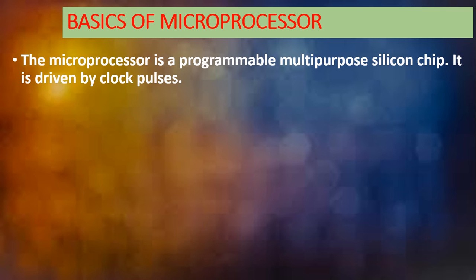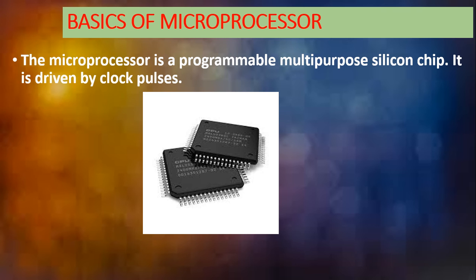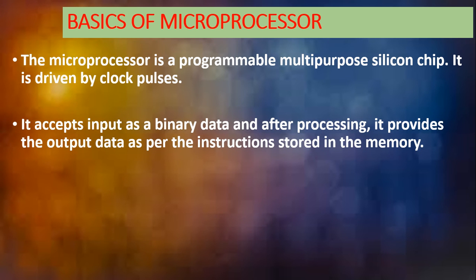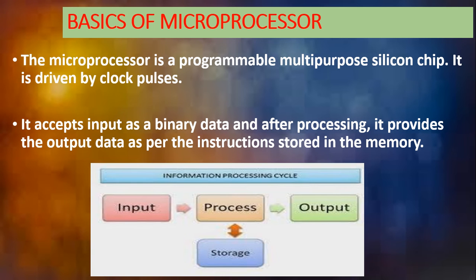The microprocessor is a programmable, multi-purpose silicon chip. It is a chip which is programmable — all the instructions are stored inside it. Without the microprocessor you cannot do anything. It is driven by a clock pulse, so whatever actions are being performed are maintained by the clock pulse. It accepts input as binary data, and after processing, it provides the output data as per the instructions stored in the memory.